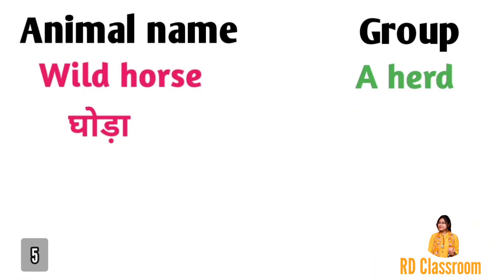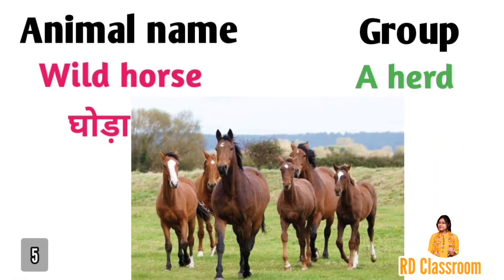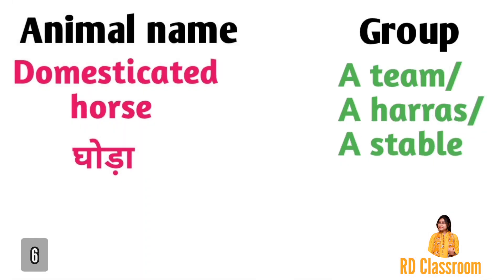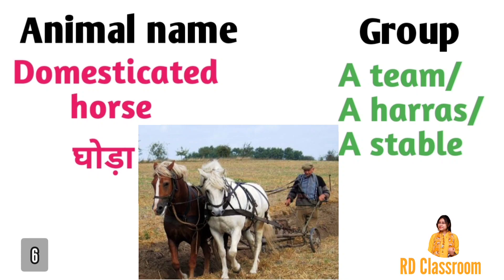Number five is wild horse, ya fir ghora, jiske group ko kaha jata hai a herd. Number six is domesticated horse, ya fir ghora, jiske group ko a team, a harras, ya fir a stable kaha jata hai.